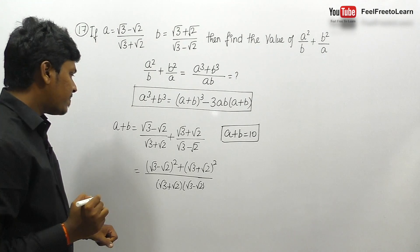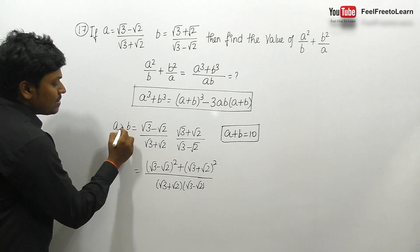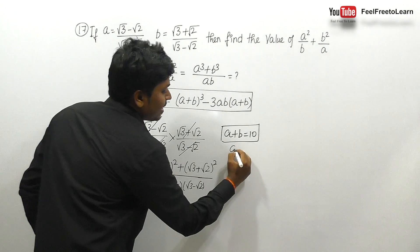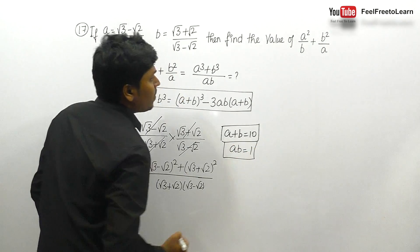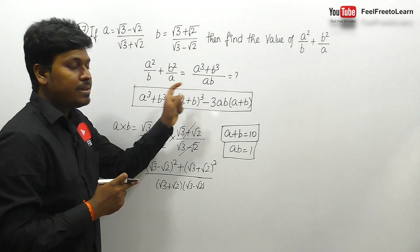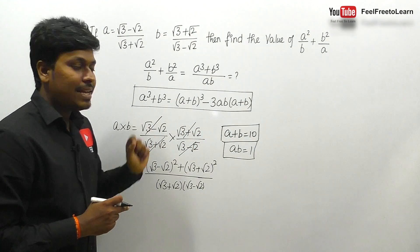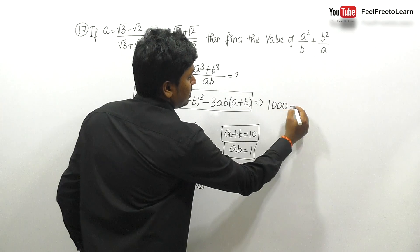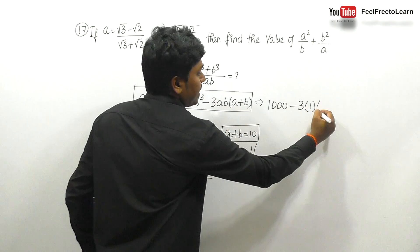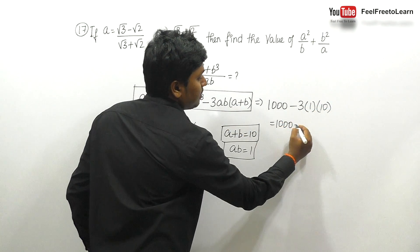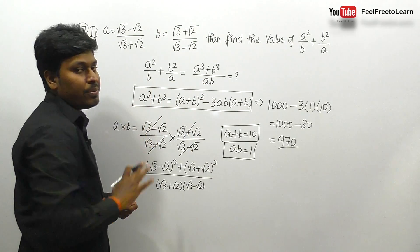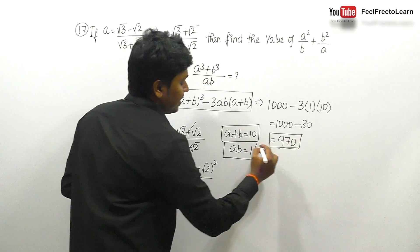For ab: multiplying a×b cancels all terms directly, giving ab = 1. Substituting into the expression: a³+b³ = (a+b)³ - 3ab(a+b) = 10³ - 3×1×10 = 1000 - 30 = 970. Since ab = 1, the answer is 970/1 = 970.